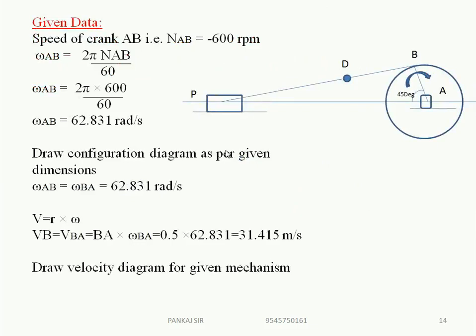First find the angular velocity of link AB. Given 600 RPM: ωab = 2πN/60 = 2π × 600 / 60 = 62.831 radian per second. Now draw the configuration diagram as per the given dimensions. The linear velocity of link AB: v = r·ω = length of BA × ωba = 0.5 × 62.831 = 31.415 m/s.